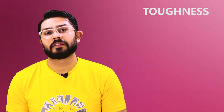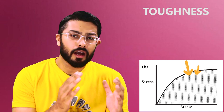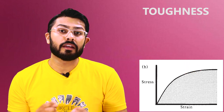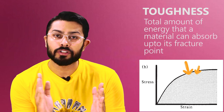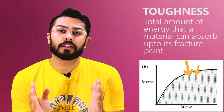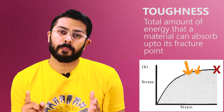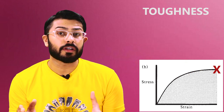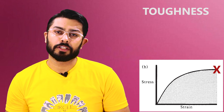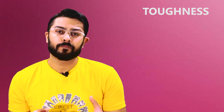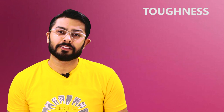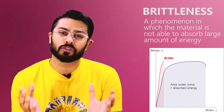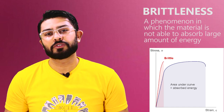Another phenomenon from the stress-strain graph is toughness, which is marked by the total area under the graph. Toughness has units of energy and is defined as the total amount of energy a material can absorb up to the point of fracture. A material capable of absorbing large amounts of energy up to its fracture point, regardless of retaining its shape, is termed a tough material. The opposite of toughness is brittleness — which describes a material that cannot absorb large amounts of energy and fractures too soon.